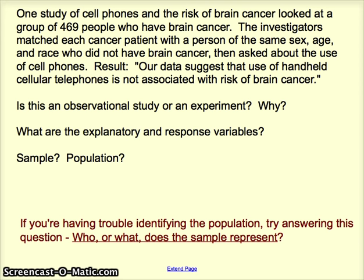The sample here is the 469 people who have brain cancer along with the 469 people they were matched against. This is called a matched pairs design, and the matching on sex, age, and race is meant to eliminate lurking variables. The population may be harder to identify — remember it's bigger than the sample. Ask yourself who or what the sample represents. Here we're studying people who use cell phones, so the population is the population of people who use cell phones, and we're interested in whether they get brain cancer or not.